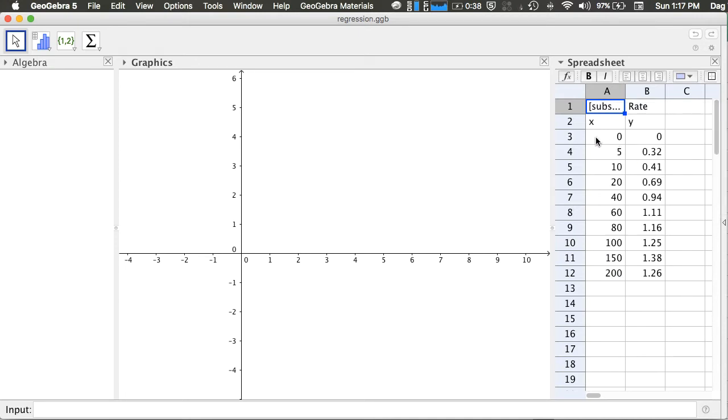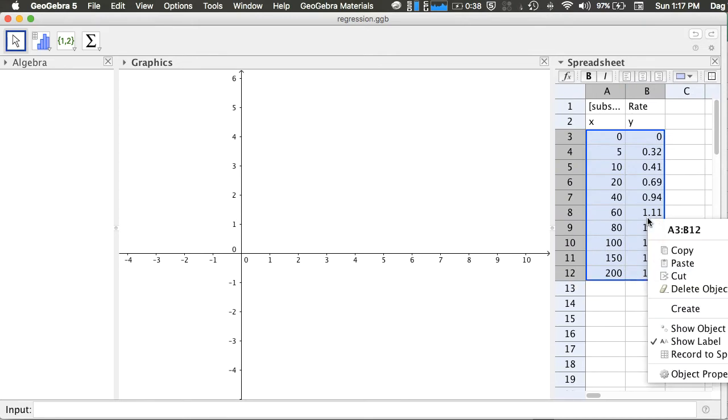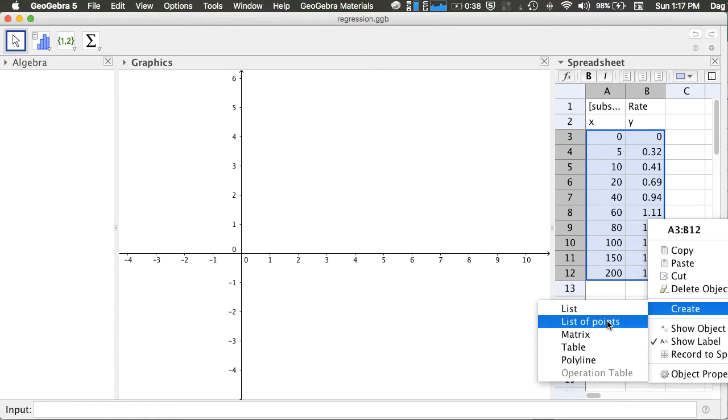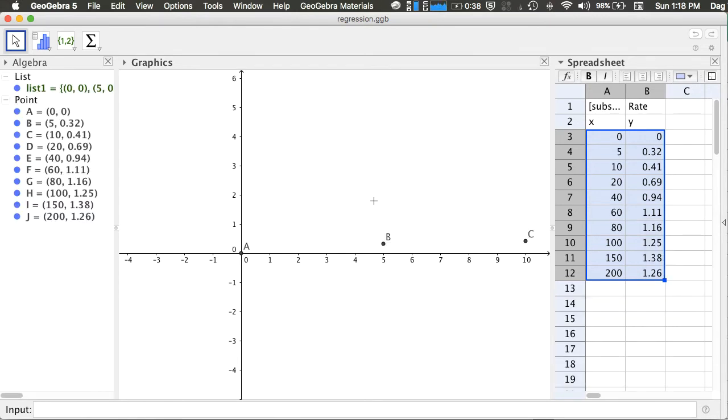To plot these data points on the graph, you have to select the data, right-click, and then choose Create list of points. As you can see in the algebra panel, the 10 points have been created, and they are grouped under list 1. You can also see the points in the graphics panel.